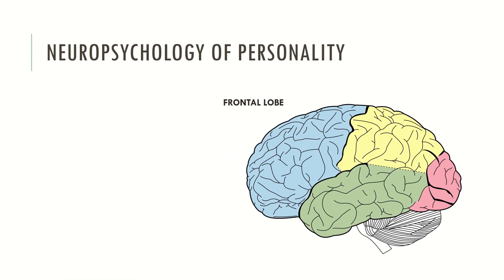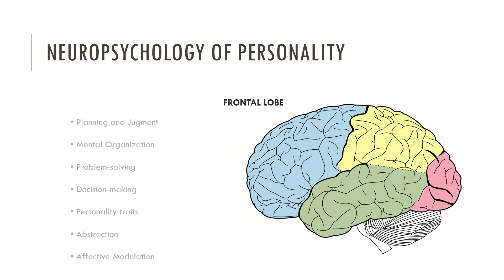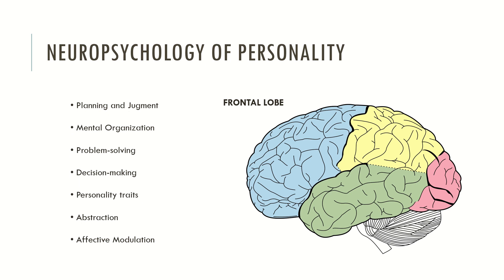Some personality traits may be correlated with the frontal lobe. Typically, we are talking about planning and judgment, mental organization, problem-solving abilities, decision-making abilities, other personality traits, abstraction and affective modulation. The frontal lobe tends to be described as the major neuronal structure associated with personality and personality traits.